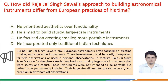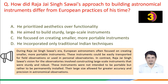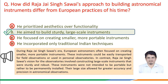During Raja Jaisingh Sawai's era, European astronomers often focused on creating smaller, more portable instruments that could be easily transported for field observations or used in personal observatories. In contrast, Raja Jaisingh Sawai's vision involved constructing large-scale instruments that were sturdy and robust — not intended to be portable but permanently installed. Their large size allowed for greater accuracy and precision. Therefore, the correct answer is option b: he aimed to build sturdy large-scale instruments.